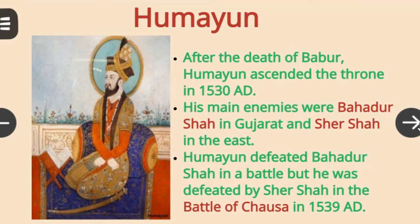After the death of Sher Shah Suri, Humayun re-ascended the throne in 1555. In 1556, unfortunately, he fell down from the stairs of Sher-e-Mandal Library and later died due to the injuries.